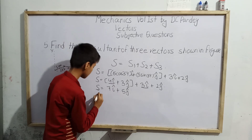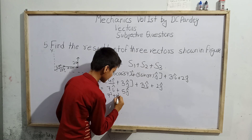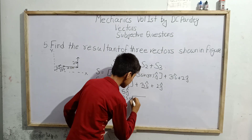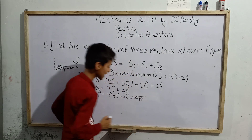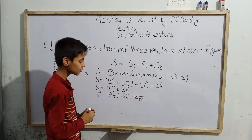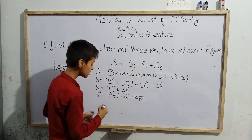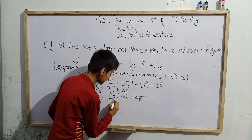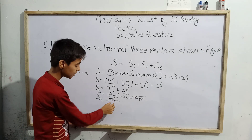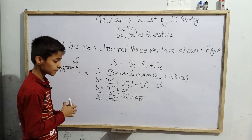Now using the standard formula, we neglect the unit vectors and compute the magnitude. S² = 7² + 5², which means S = √(7² + 5²) = √(49 + 25) = √74. Since 74 is not a perfect square, we leave it as is. So S = √74 meters.